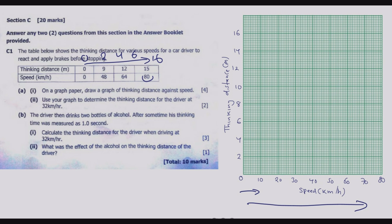Now we start plotting the values. The y-axis is thinking distance and the x-axis is speed. The point (0, 0) is at the origin. Next, speed 48, thinking distance 9 meters: 48 on the x-axis is 2 units below 50, and 9 on the y-axis is halfway between 8 and 10. Then (64, 12): find 64 on the x-axis, move to 12 on the y-axis.